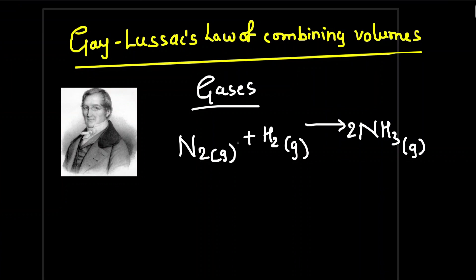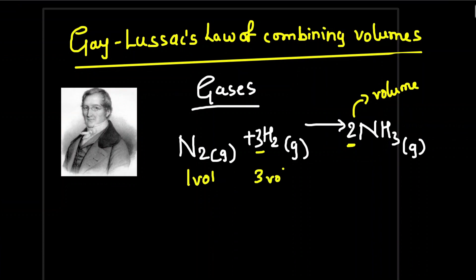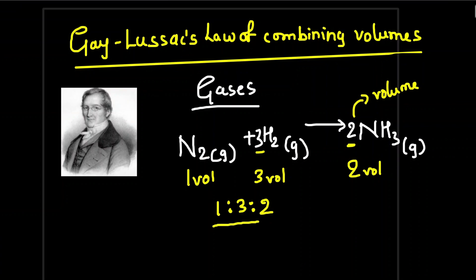If we balance this equation, it becomes 2N2 requires 3H2. What Gay-Lussac stated is that when gases react — like nitrogen and hydrogen, both being gases — they bear a simple ratio between their volumes. The coefficient tells us the volume: nitrogen is 1 volume, reacts with 3 volumes of hydrogen, and produces 2 volumes of ammonia.